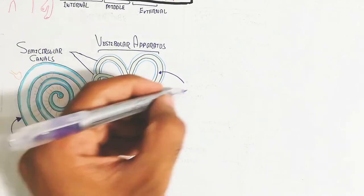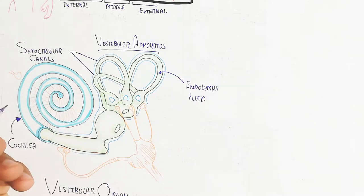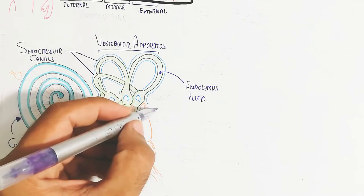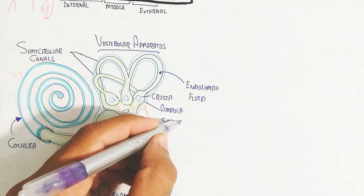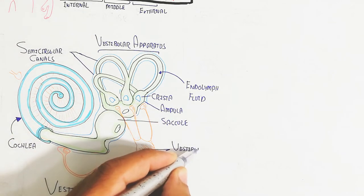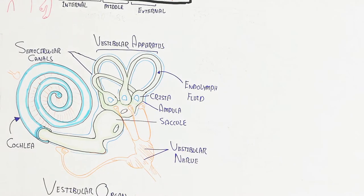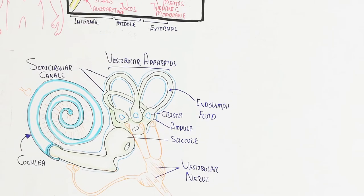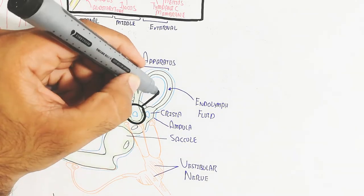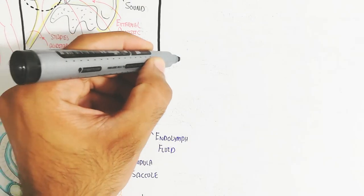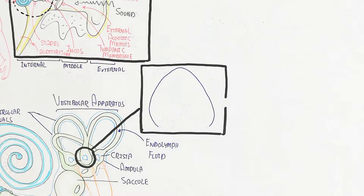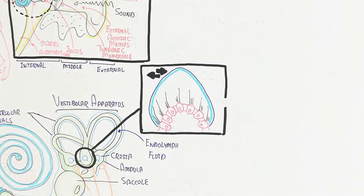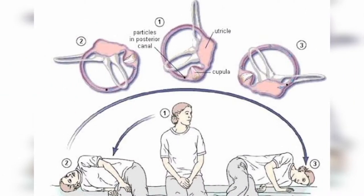The semicircular canal contains endolymph fluid. This endolymph fluid movement detects the posture of our body and balance, and transmits the signal to our muscles to balance the body — for example, when we are standing or sitting in a chair. This is the vestibular nerve, and this is the ampulla, saccule, and the crystals. These contain hair cells surrounded by the cupula, which is gelatinous.